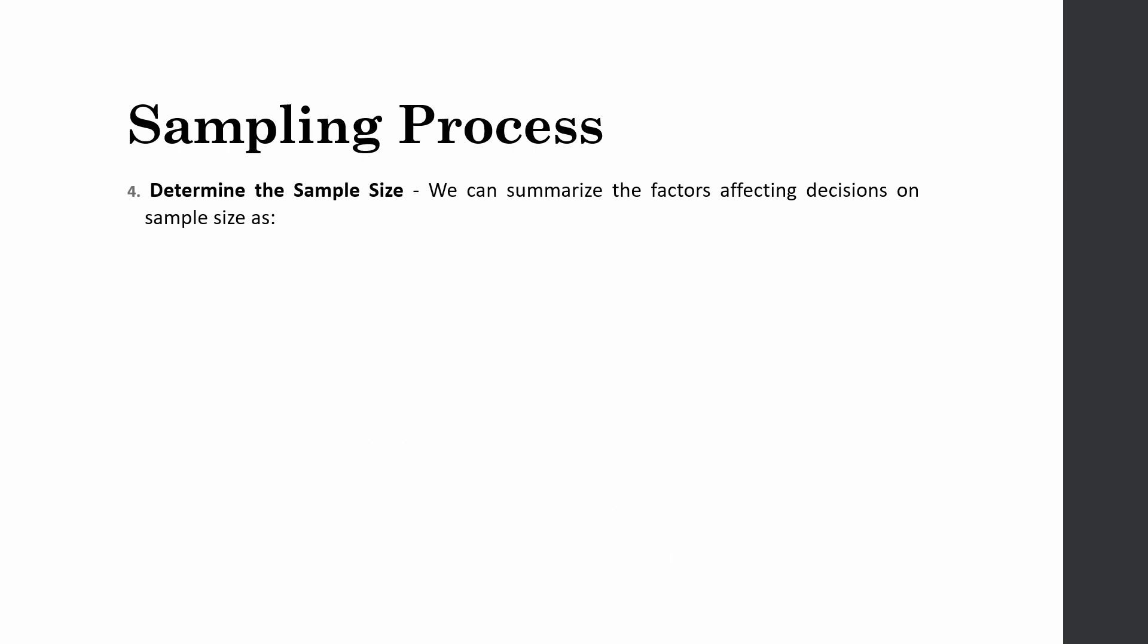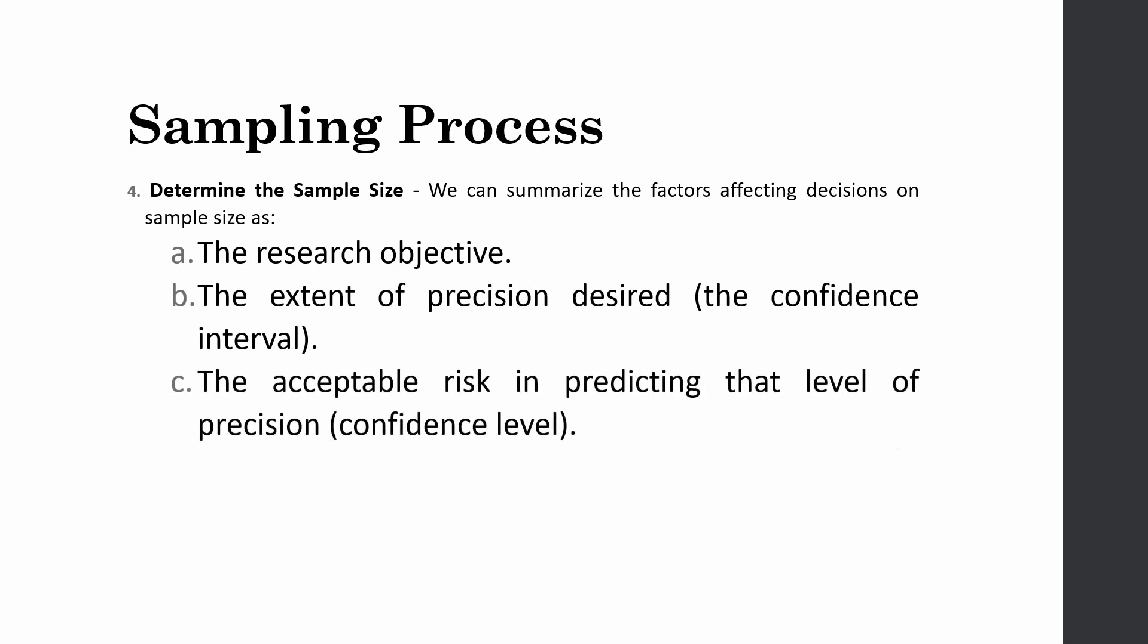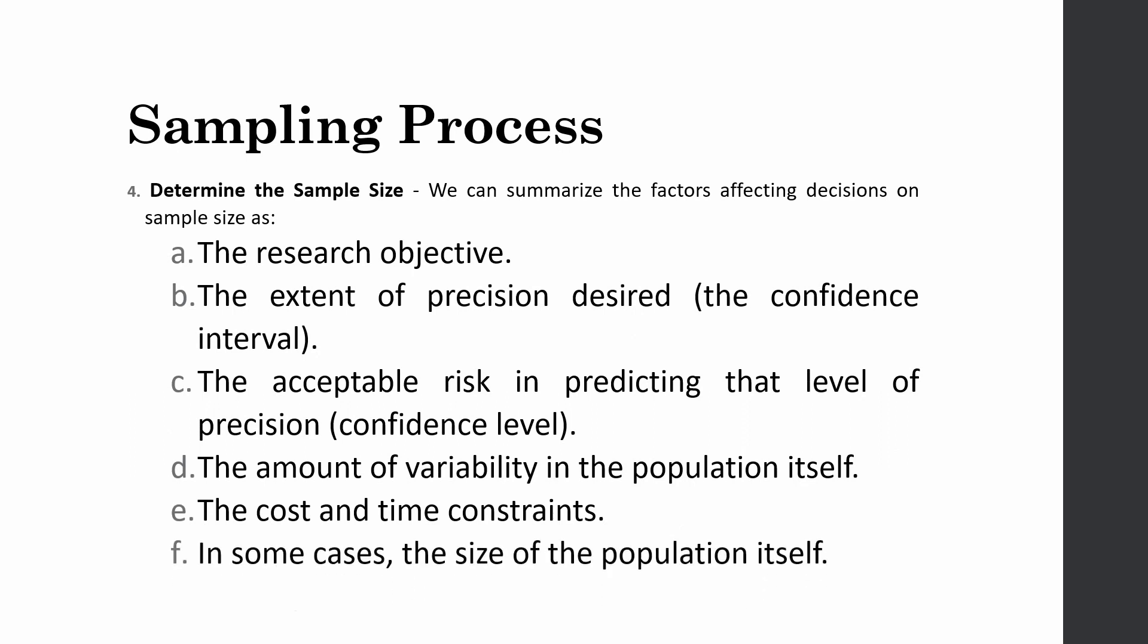The next step is you have to determine your sample size. We can summarize the factors that can affect your sample size. And what are those factors? Those factors are what is your research objective, what is the precision that you desire, the confidence interval, the acceptable risk in predicting that level of precision, that is your confidence level, the amount of variability in the population itself, and the cost and time constraints. Let's say I am short of cash and I have got very limited time. Then again you cannot have a large sample size. And in some cases the population size itself matters as well. Let's say you have got a very small population size. But again these are the considerations for sample size.